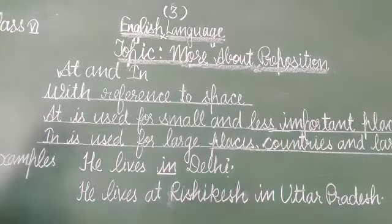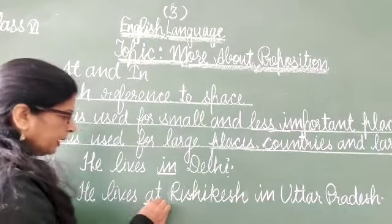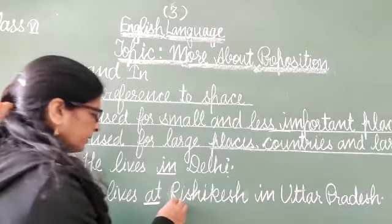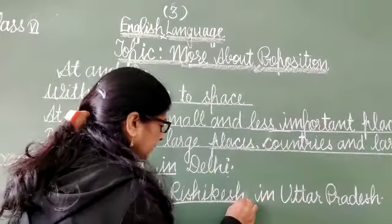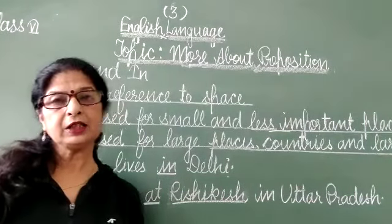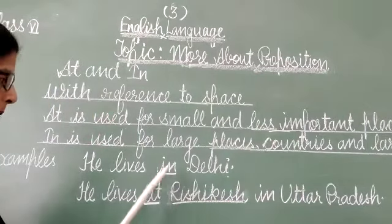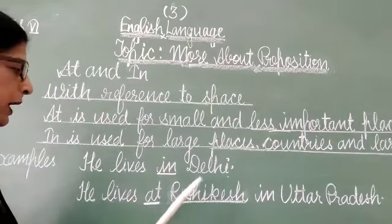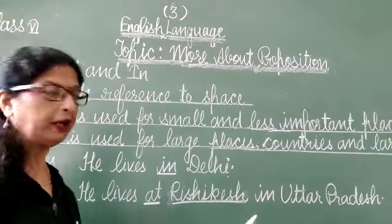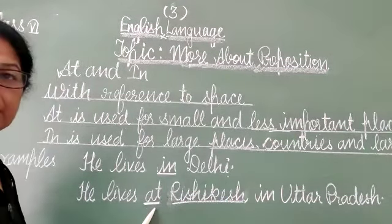He lives at Rishikesh in Uttar Pradesh. In this sentence, the preposition 'at' is used for Rishikesh because, comparatively to Delhi, Rishikesh is a small city. That's why we have used the preposition 'at' in this sentence.